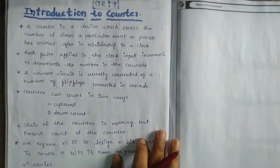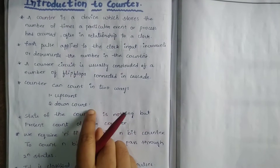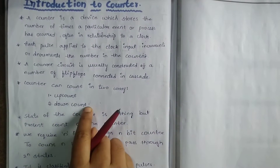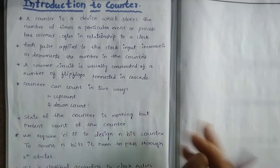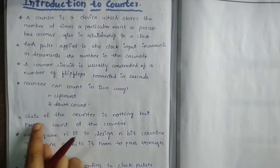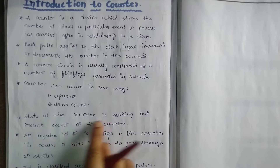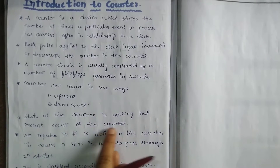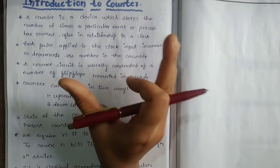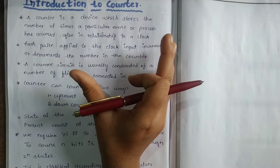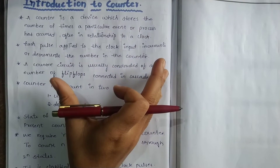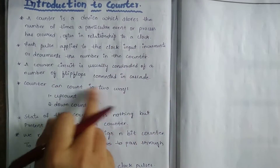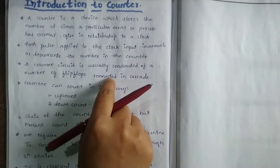For the up-count, we use applications like voting machines. For the down-count example, you can use down-count applications. So the state of the counter is nothing but the present count of the counter — that is the current state the counter is in right now.